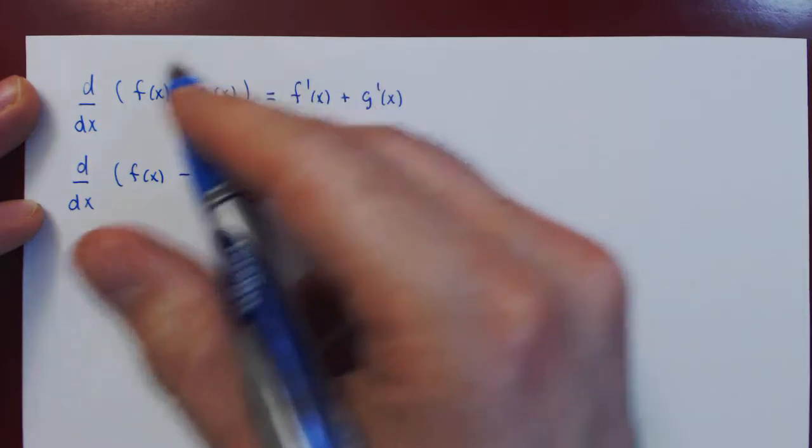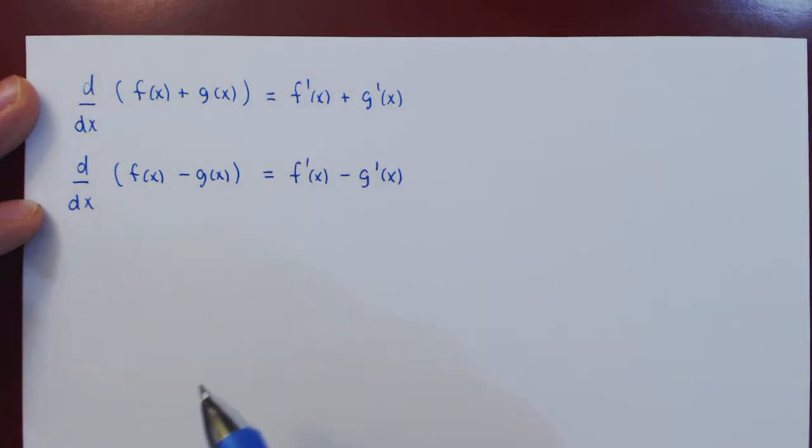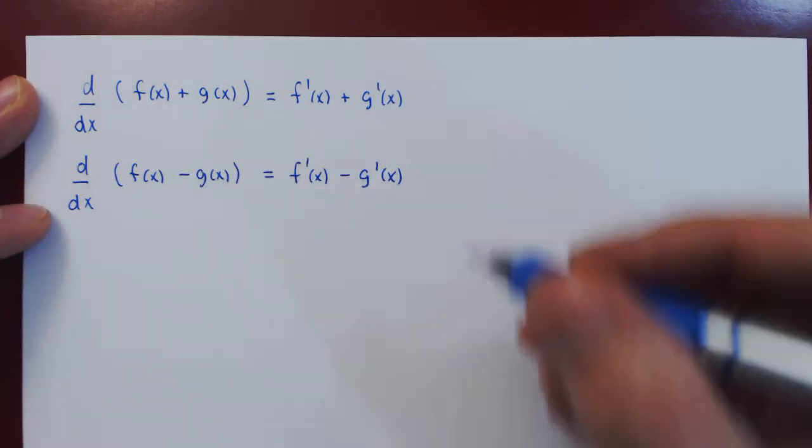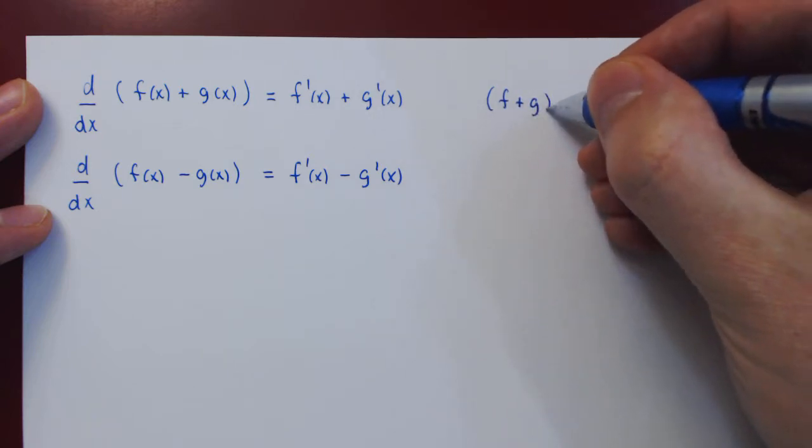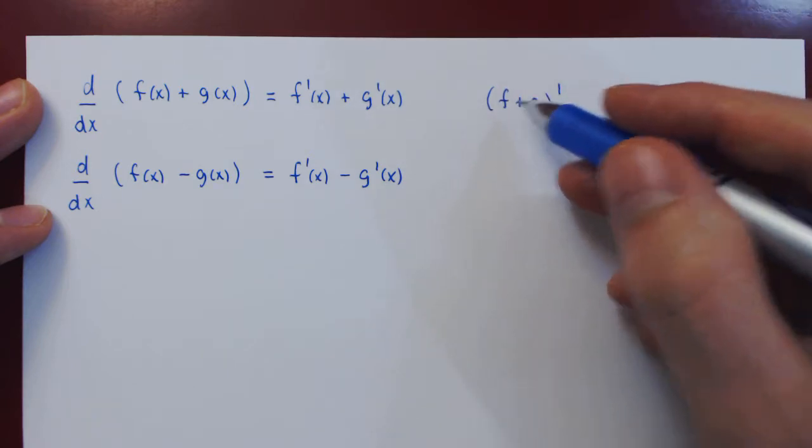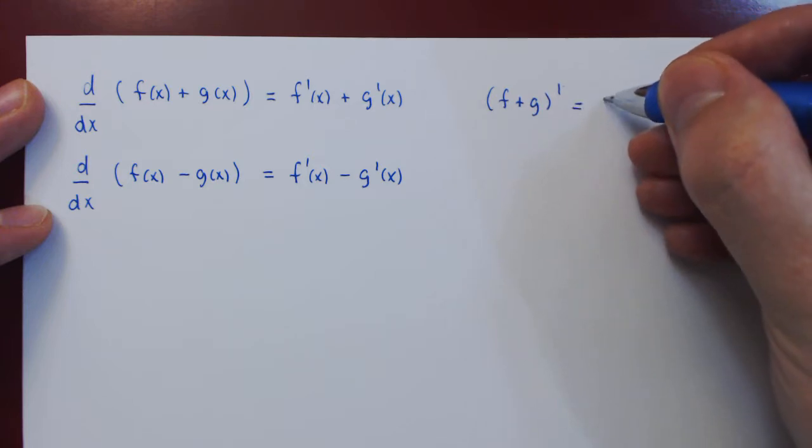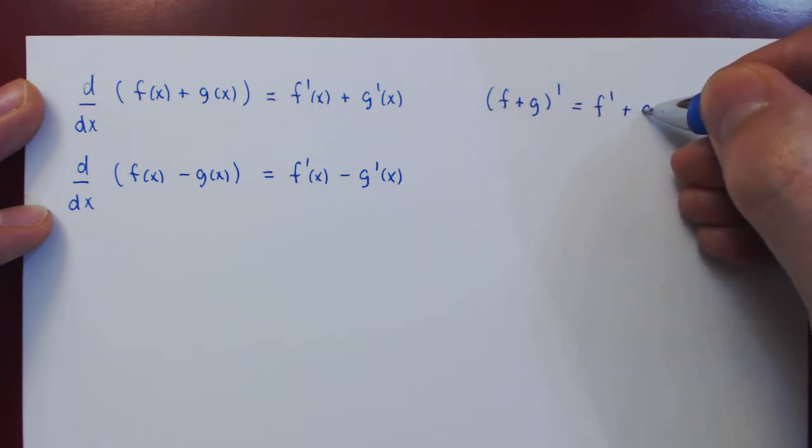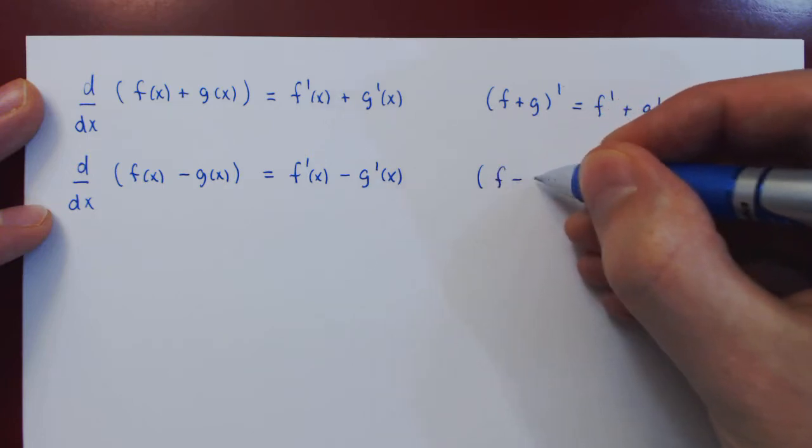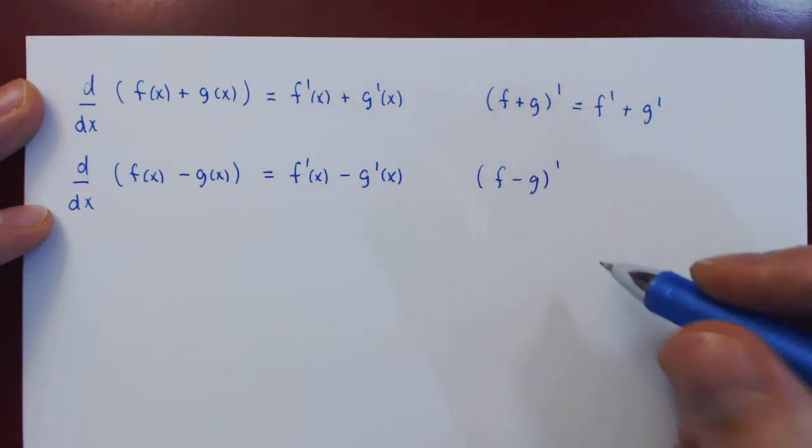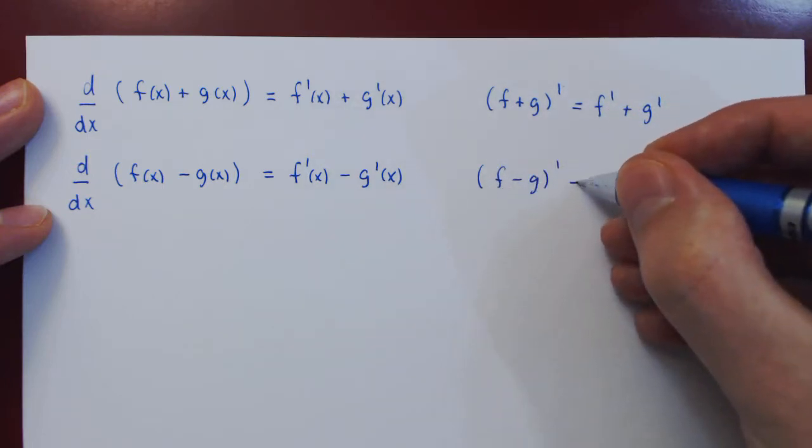And we can, of course, write this more concisely using the prime notation and dropping the x's. So we can say that f plus g prime, therefore the derivative of f plus g, is the derivative of f plus the derivative of g. And the derivative of f minus g is,